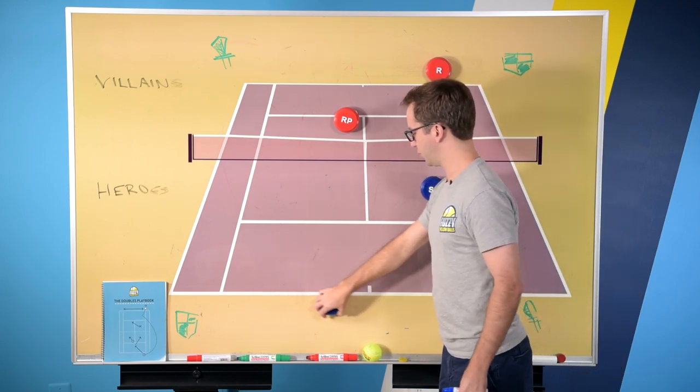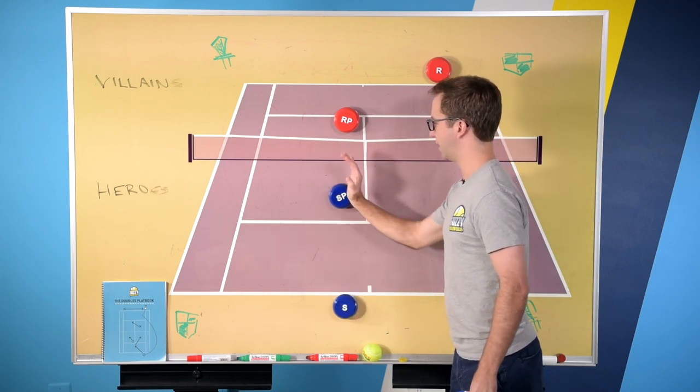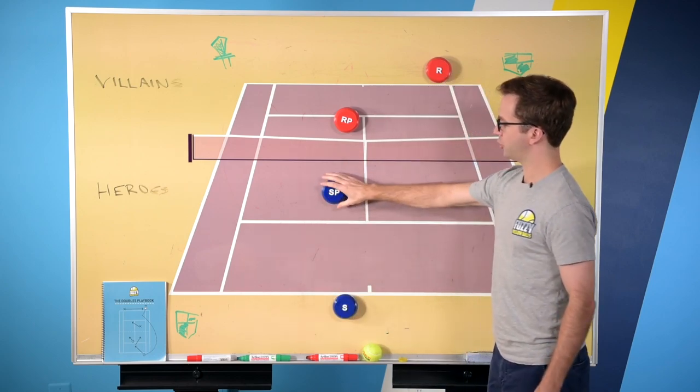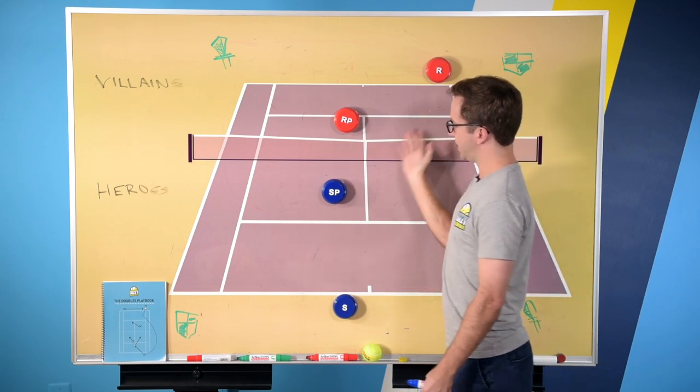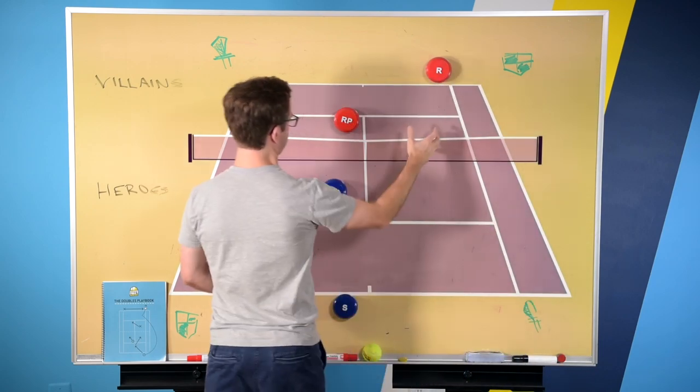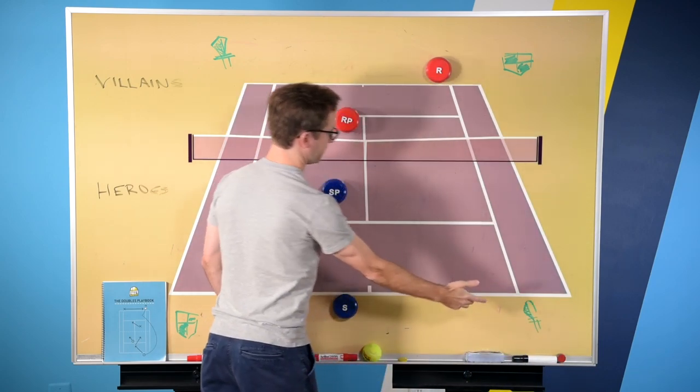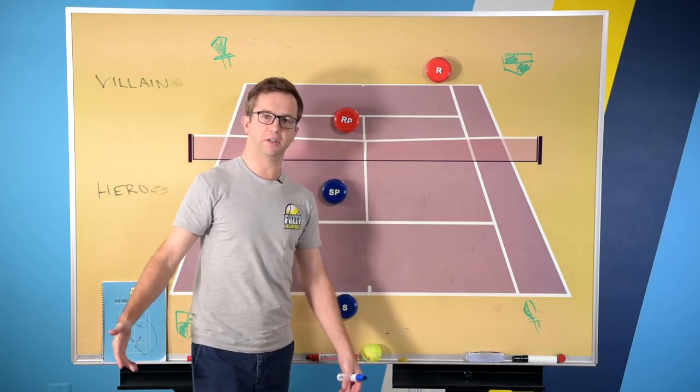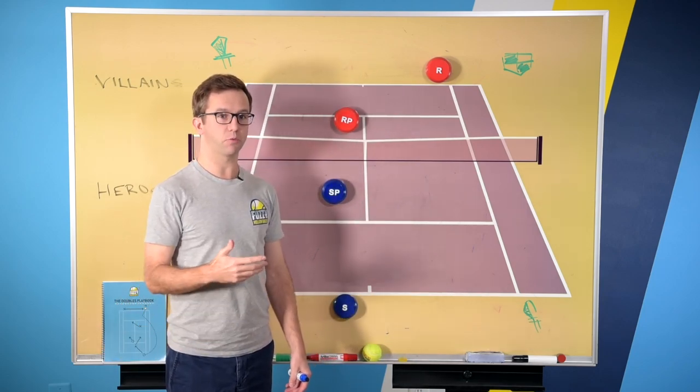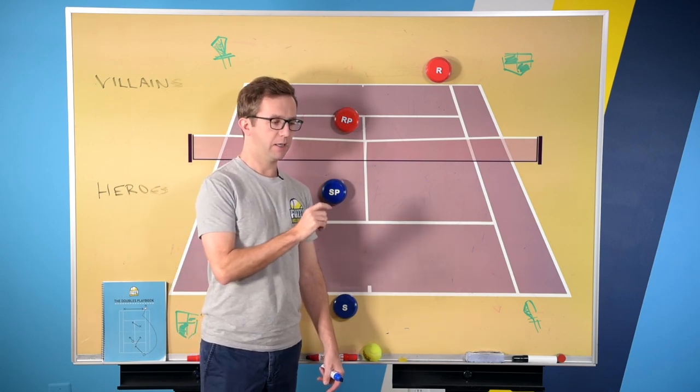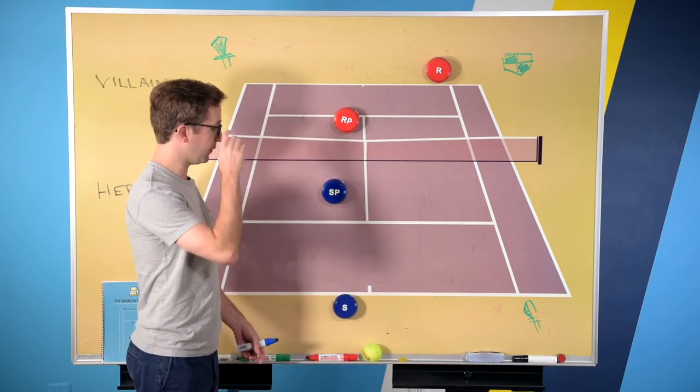So the Aussie is where the server would stand near the T and the service partner actually stands in the service box over here. So you're taking away the crosscourt, but everything here is now a forehand. So this is great, particularly if either you or your partner has a really weak backhand shield volley, which you can often see at the club level.